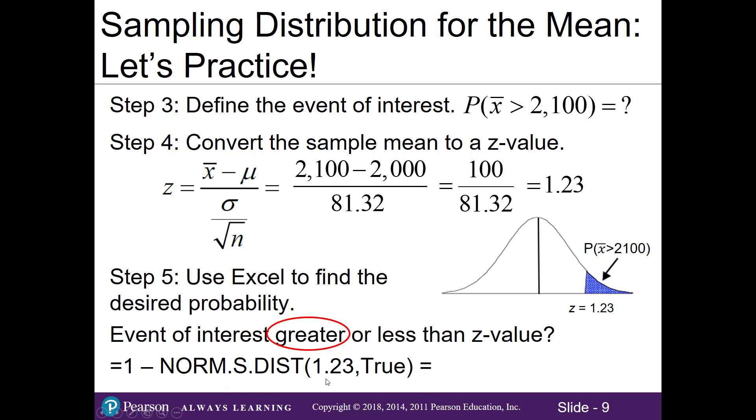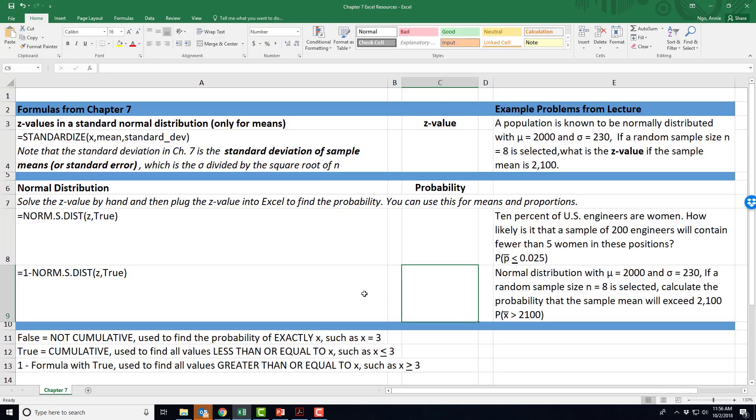In this chapter, because we are doing the z values by hand, we use this formula: norm.s.dist, and put that z value in. We always use true for the cumulative because we want to find the probabilities in this area. We're adding up all the little probabilities in this shaded area. Let me show you what it looks like in Excel. Here are our two formulas for the normal distribution. This formula is used when we're looking at less than or equal to some number, and this is the formula used for greater than or equal to some number.